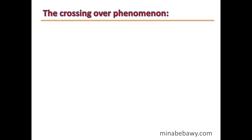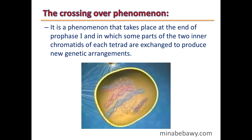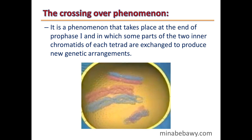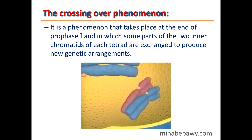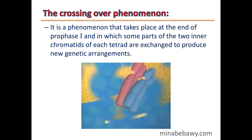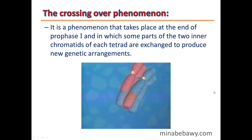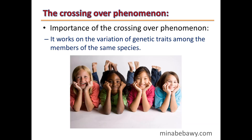What is meant by crossing over? It is the phenomenon that takes place at the end of prophase 1, in which some parts of the two inner chromatids of each tetrad are exchanged to produce a new genetic arrangement. As you can see, the two inner chromatids of the red and blue chromosomes exchange segments, producing a new genetic arrangement. The importance of crossing over is that it causes variation of genetic traits among members of the same species.